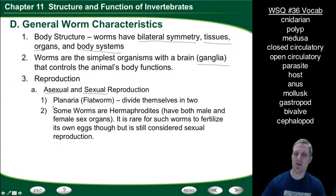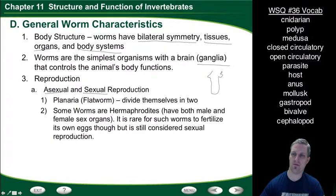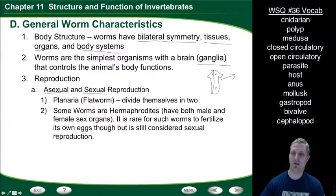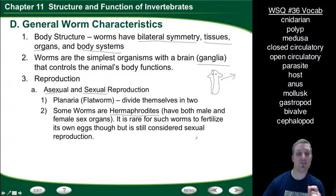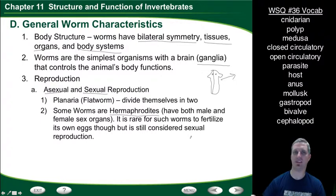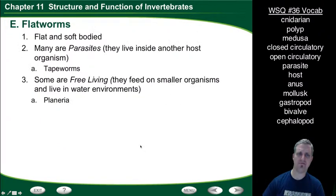Worms can reproduce asexually or sexually depending on the organism. Planaria, a type of flatworm, can divide itself in two, producing another planaria with the same genetic information — that's asexual reproduction. Some worms are hermaphrodites, meaning they have both male and female sex organs, as we see in earthworms. However, it typically takes two different worms, with one supplying sperm and the other the eggs. That's still considered sexual reproduction because sperm and egg come together to produce a zygote.